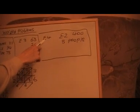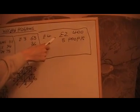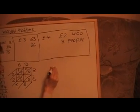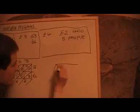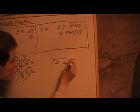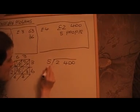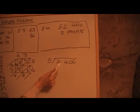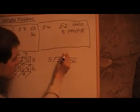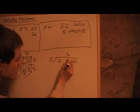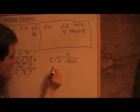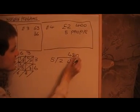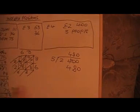The next problem says these people won the lottery and want an equal amount each. So we need to divide this amount by 5. 5 doesn't go into 2, so we move along. At 24: 5 goes into 24 four times, remainder 4. 5's into 40 is 8. And 5's into 0 is 0. So the answer is 480.